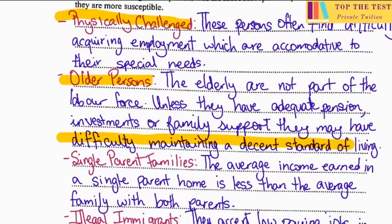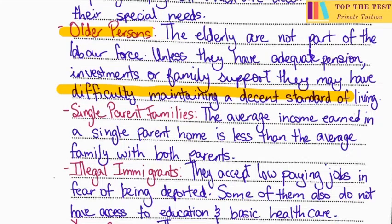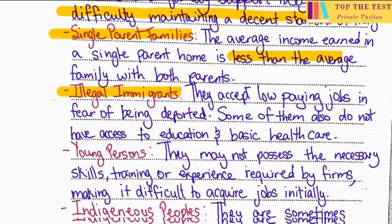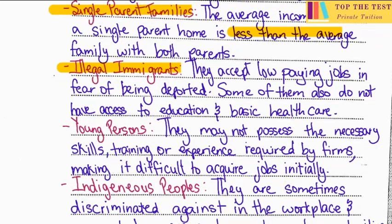The third category is single parent families — the average income in a single parent home is less than the average family with both parents. Next, illegal immigrants, which is very relevant in the case of Trinidad and Tobago, facing illegal immigrants from Venezuela. Illegal immigrants accept low-paying jobs in fear of being deported, and some do not have access to education and basic health care.